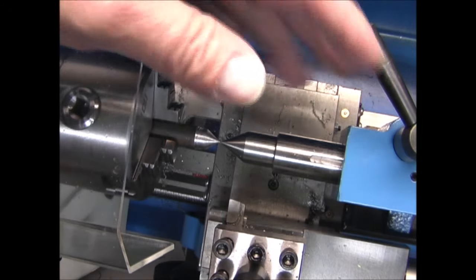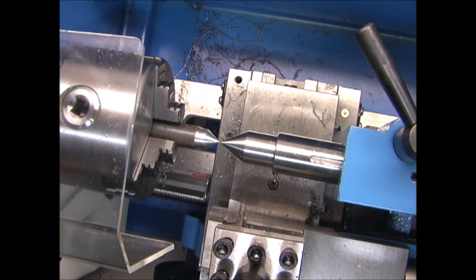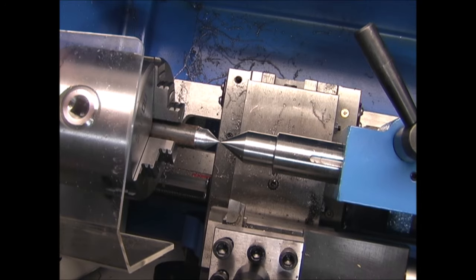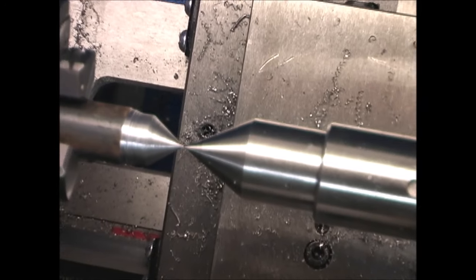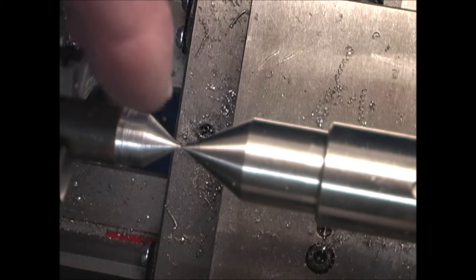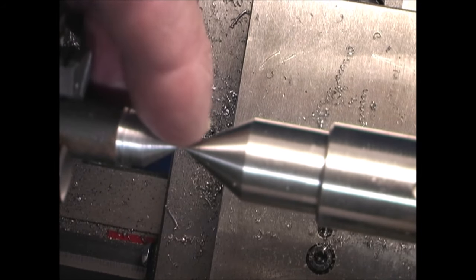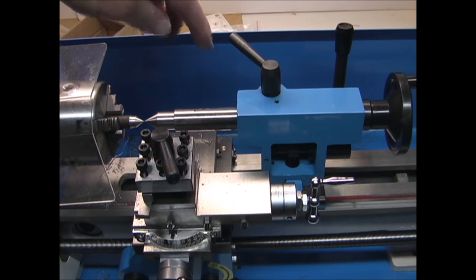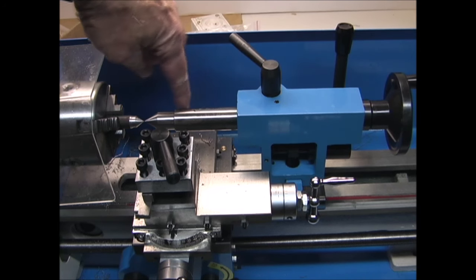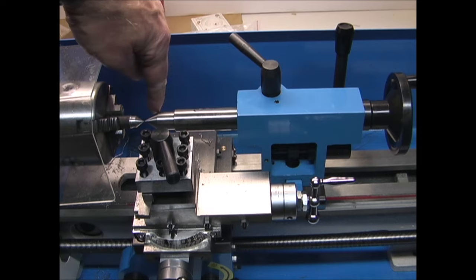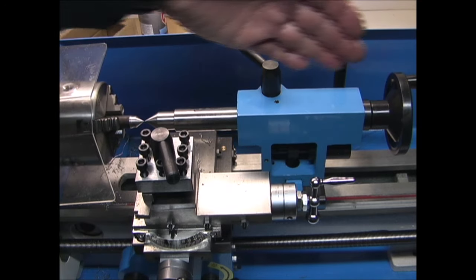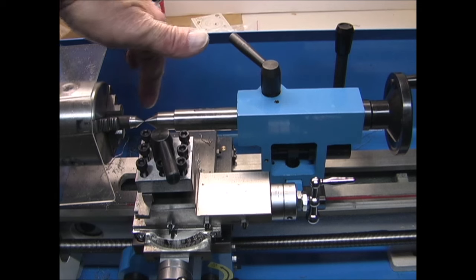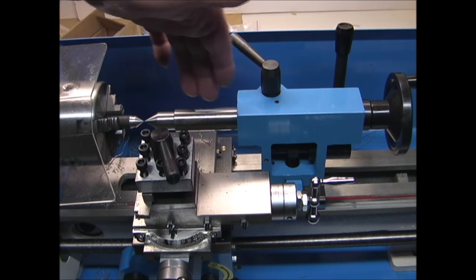I loosened the screw and adjusted the tailstock slightly forward, and I think it looks a lot better now. You can see the two points are lined up, so that's good. You should check it with the quill as far in as it will go and out, because the tailstock may be at an angle. If it's good when it's back here and up here, then it's running parallel.